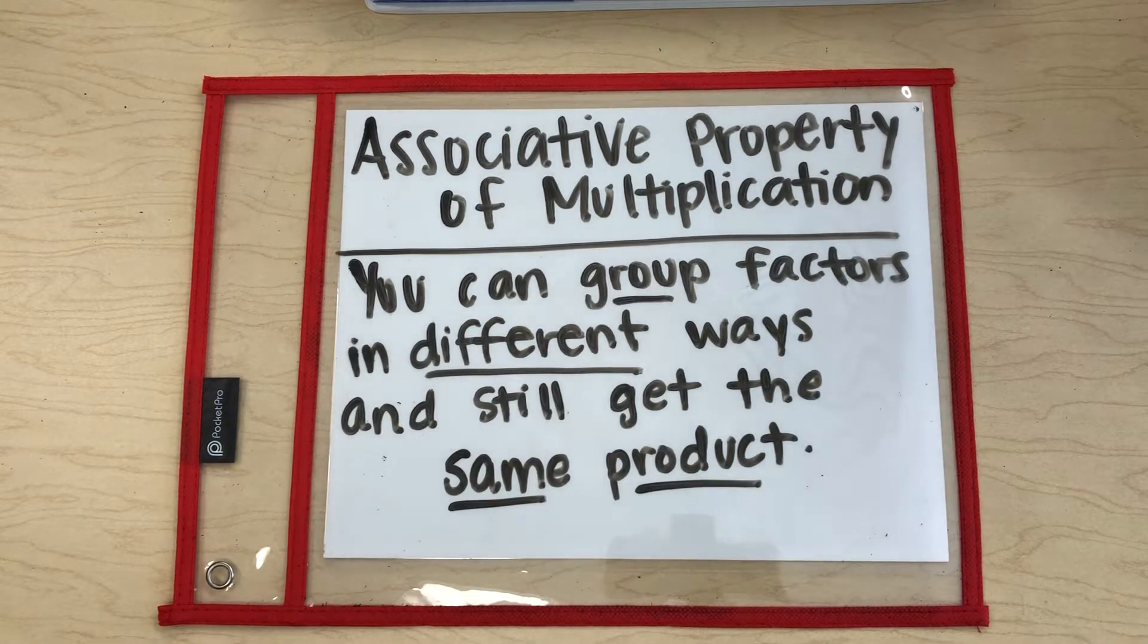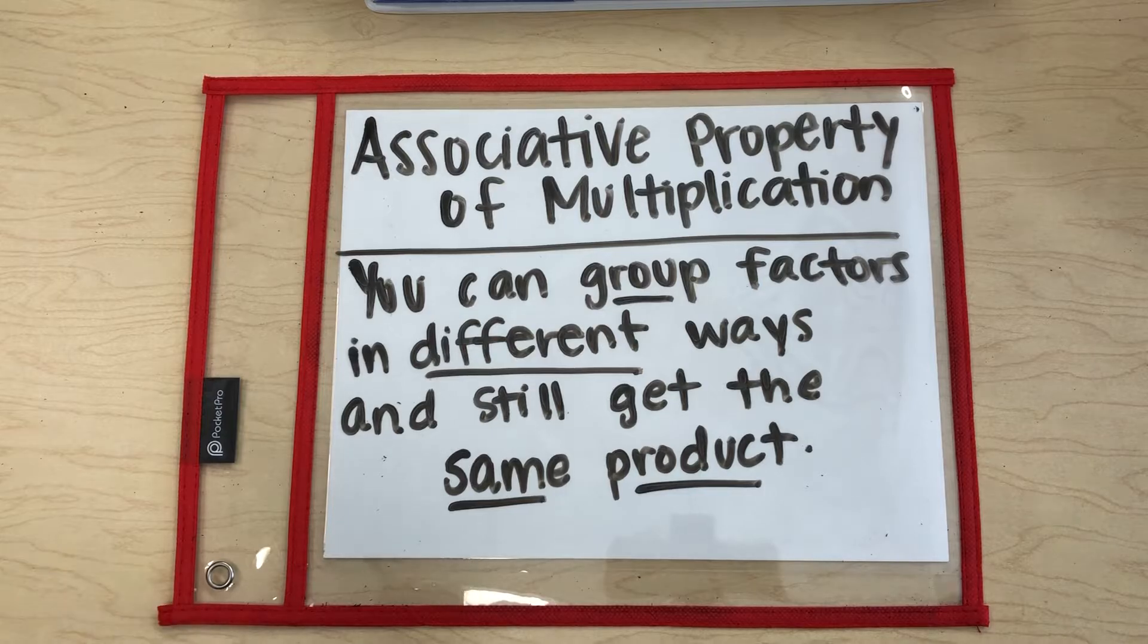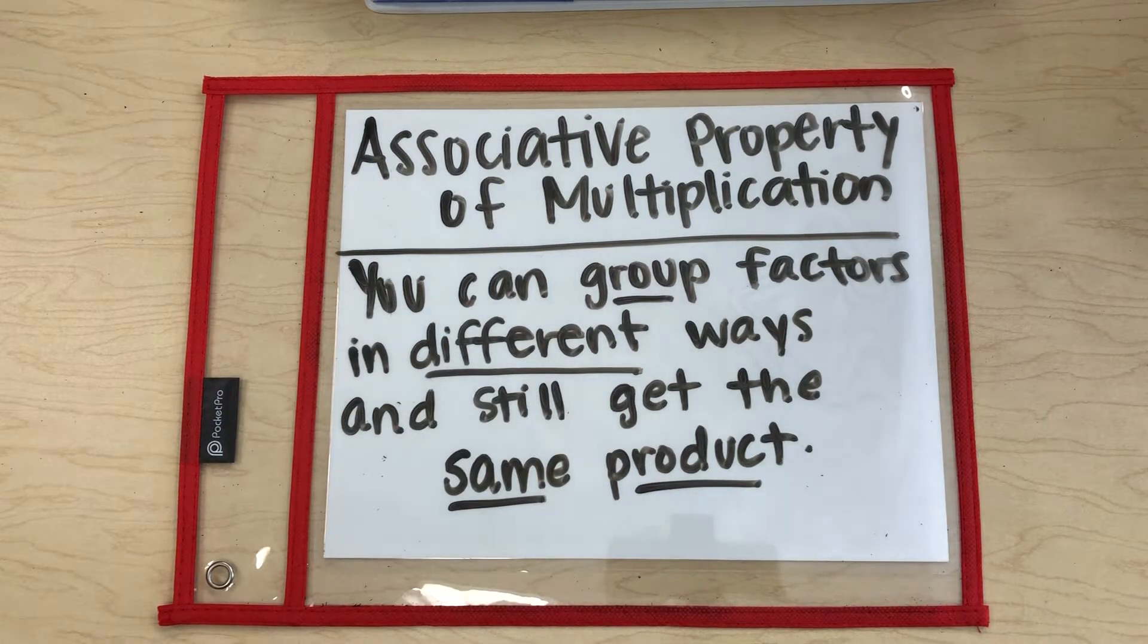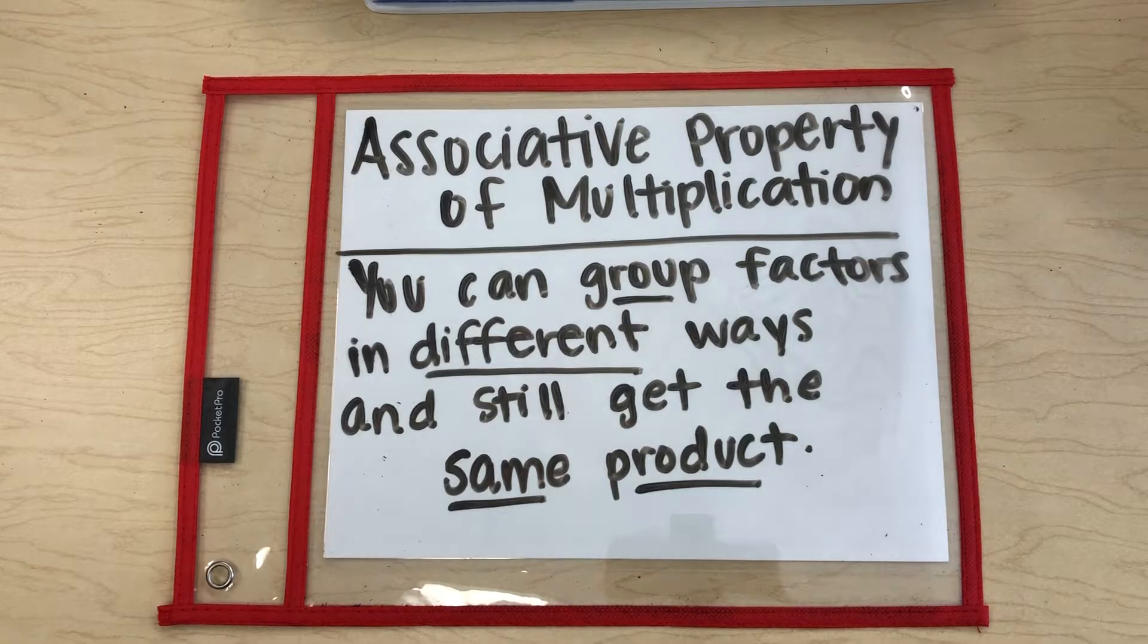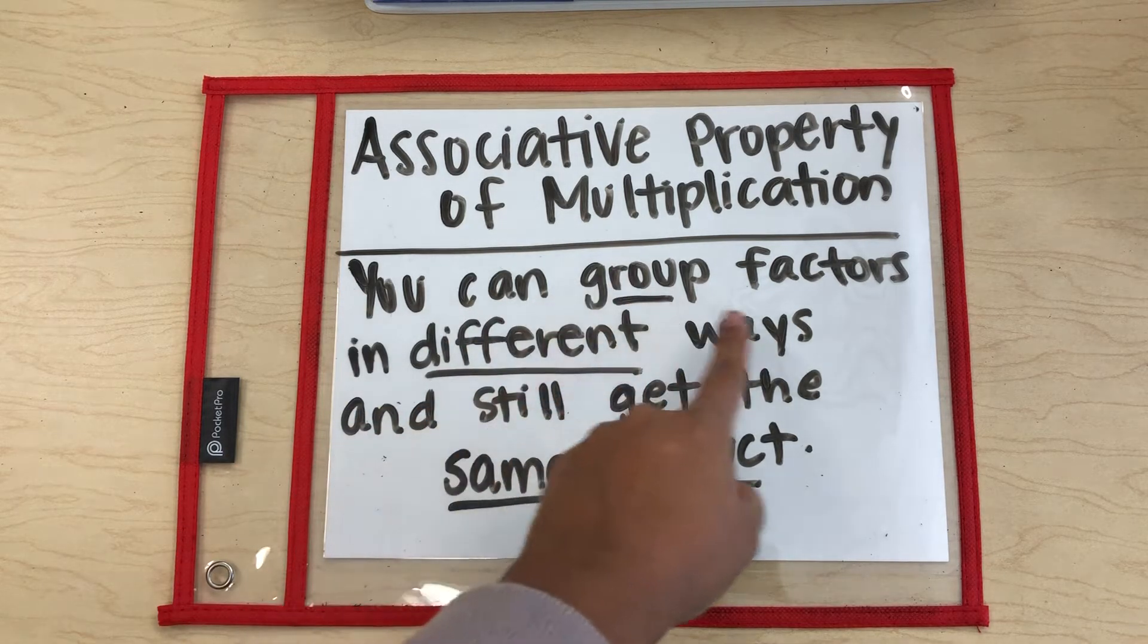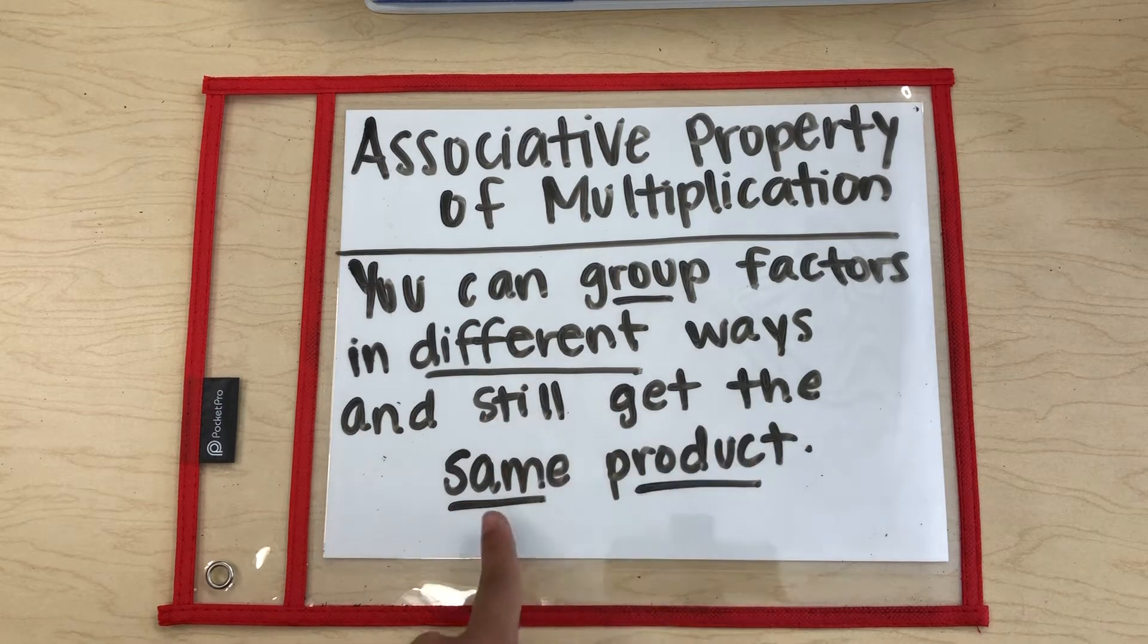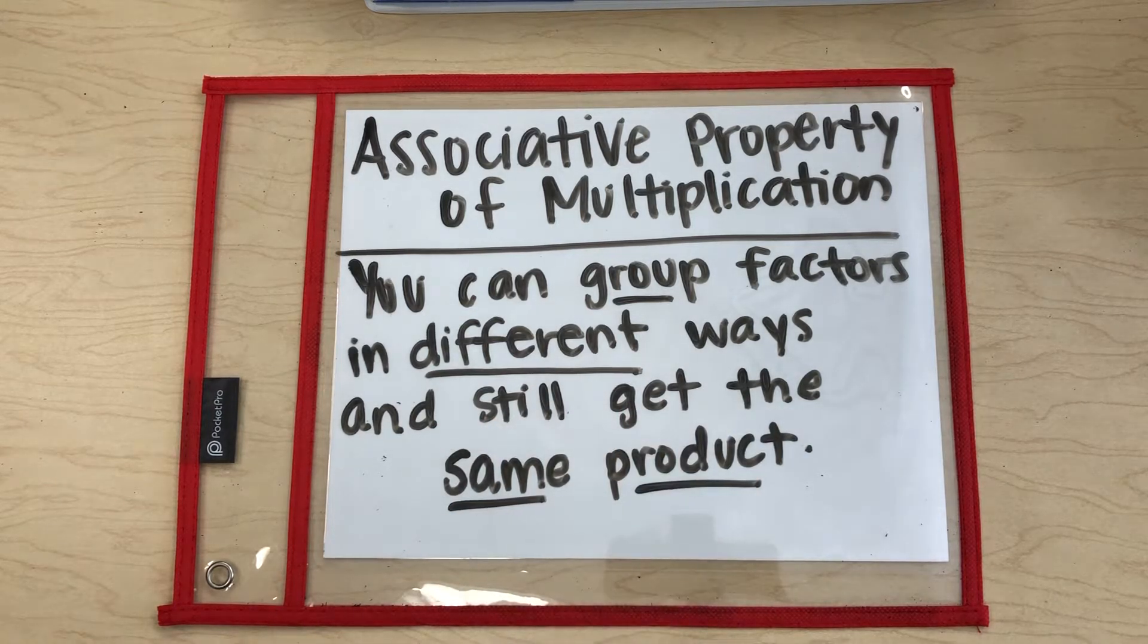This means that these numbers are going to associate with each other and communicate. The associative property of multiplication means you can group factors in different ways and still get the same product. Doesn't that sound a little crazy?